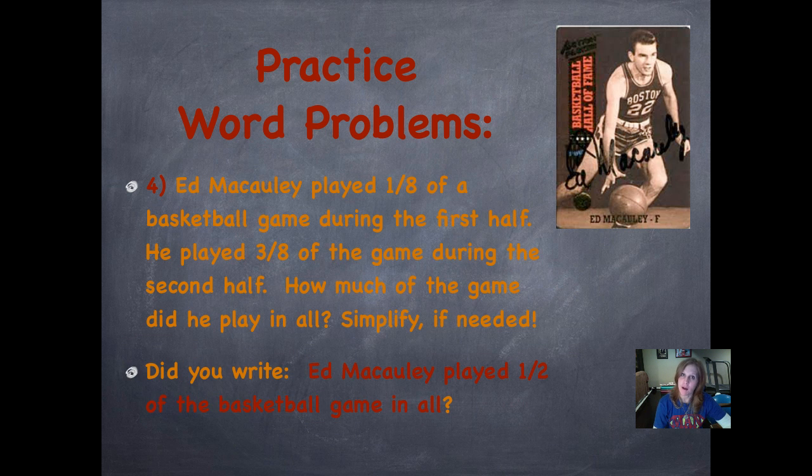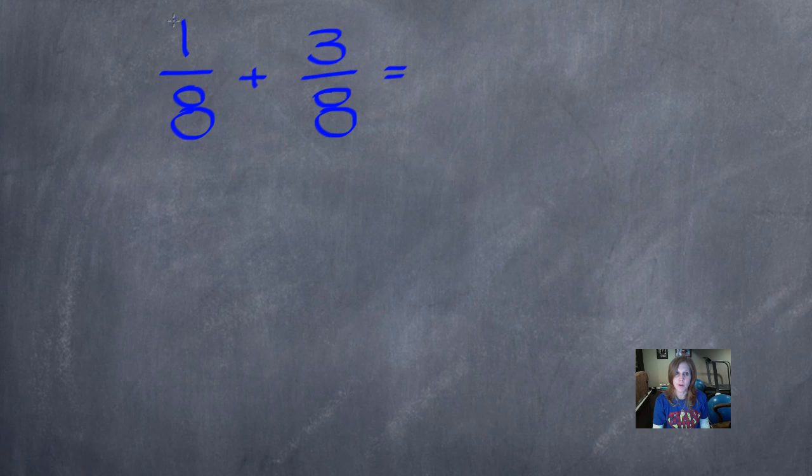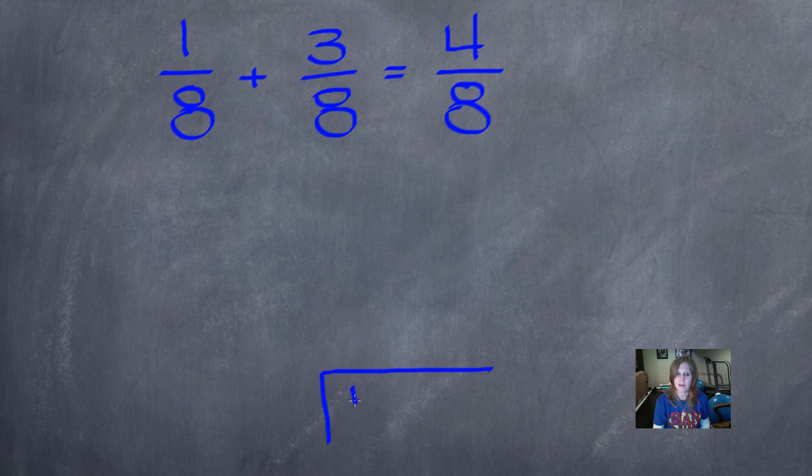Did you write, Ed McCauley played half of the basketball game in all? That in all was the key word that told us to add. We wanted to know how much he played for the entire game, so we added those two parts together. And we made sure we wrote it as a complete sentence. But let's check out the actual math computation work. So we'll start by adding our numerators. One plus three is four. And our denominator stays the same. These are both even numbers, so I'm going to make a cake to simplify. Make a cake, simplify. Simplify, make a cake. Remember to write this as a fraction. Four-eighths.